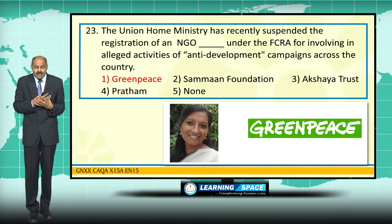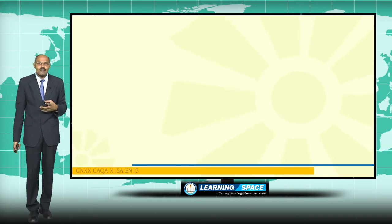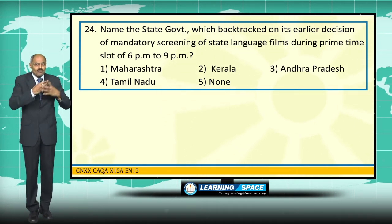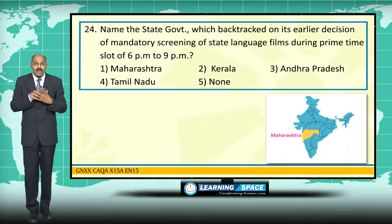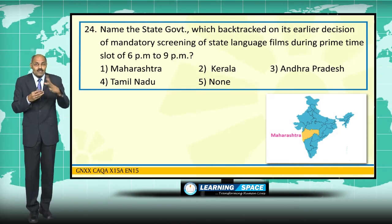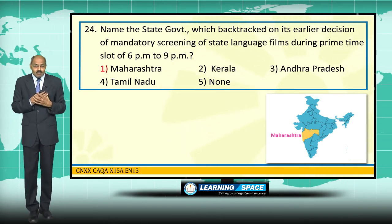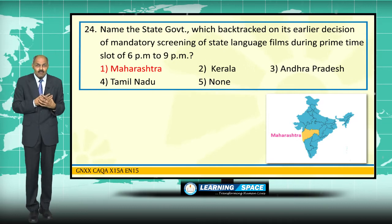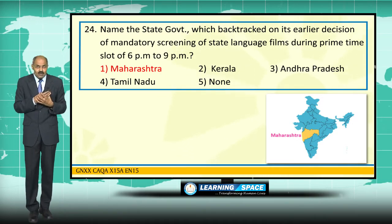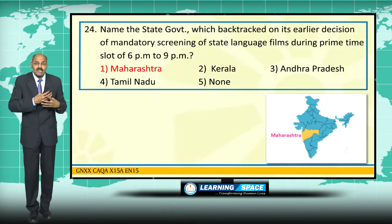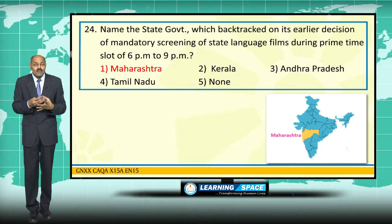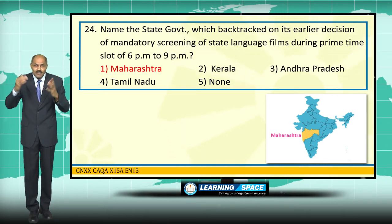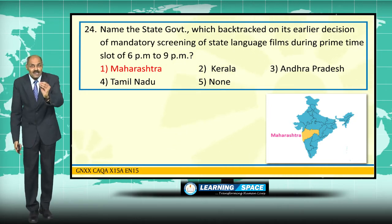The Maharashtra government backtracked on its earlier decision of mandatory screening of Marathi language films during the prime time slot of 6 PM to 9 PM. Due to opposition from several quarters including Shiv Sena, the government revised its position and now says one show during 12 noon to 9 PM is sufficient.